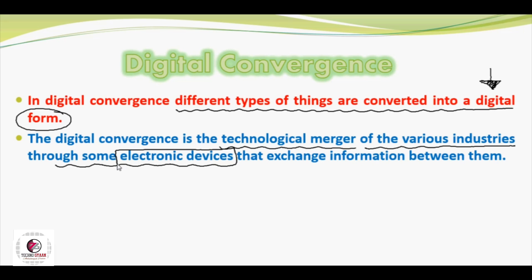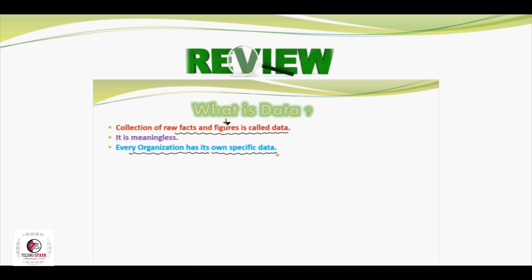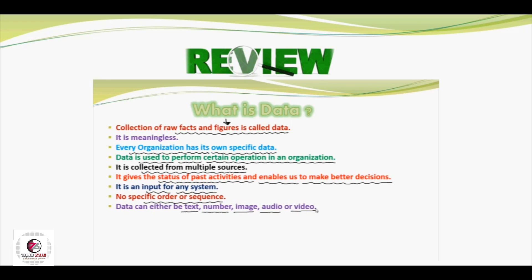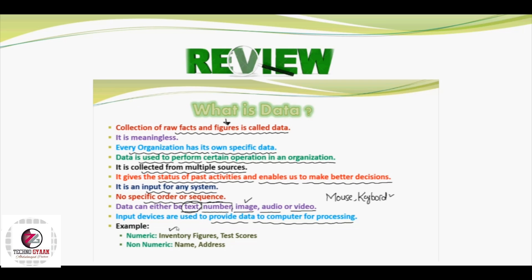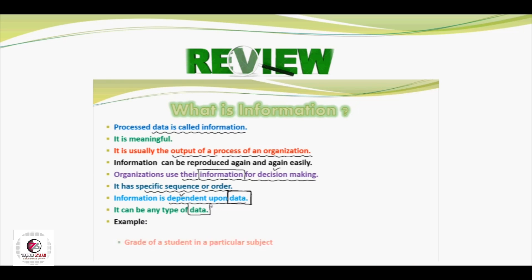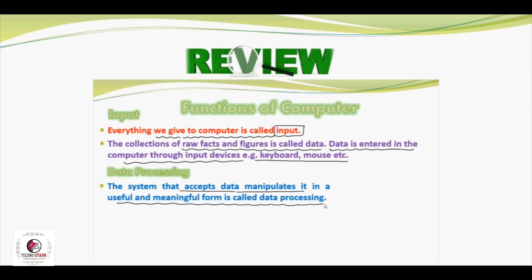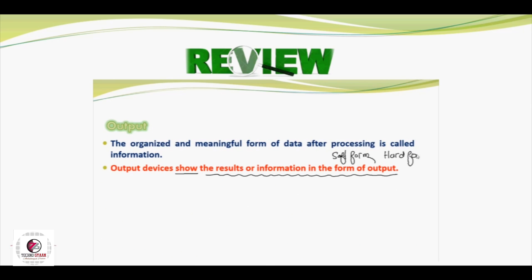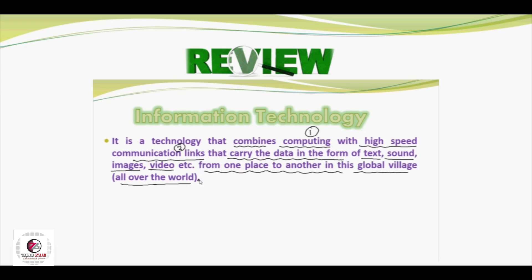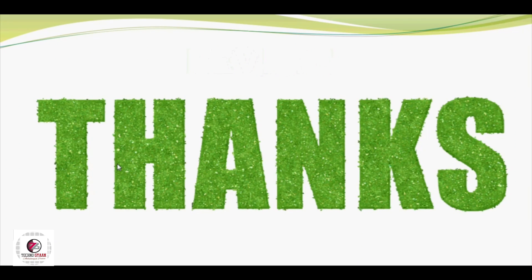So this is where today's lecture ends. In the review of today's lecture: we discussed that a computer has four major parts. Then we discussed data — collection of raw facts and figures is called data, data is converted into information, and data is meaningless. On the other hand, processed data is called information — information is meaningful. Then we saw the basic functions of computer: number one input, number two data processing, number three output, number four storage. After that we saw the definition of information technology, and lastly we saw what digital convergence is. I hope you understood. Thanks for watching.